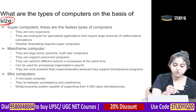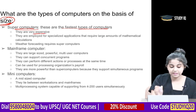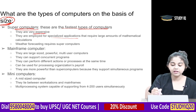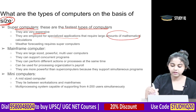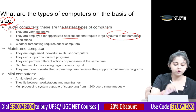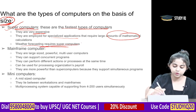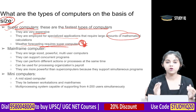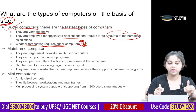Supercomputers are the fastest types of computers. They are very expensive and are employed for specialized applications that require large amounts of mathematical calculations. Supercomputers are generally used for weather forecasting.